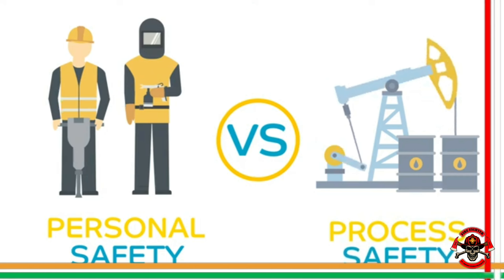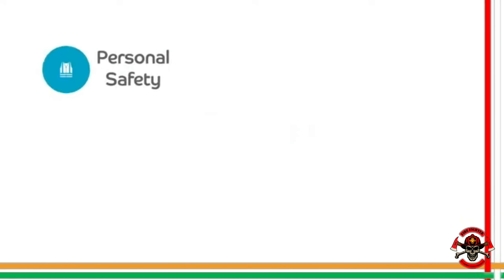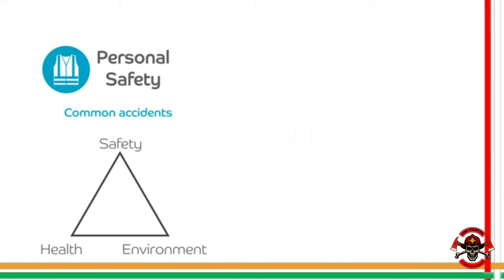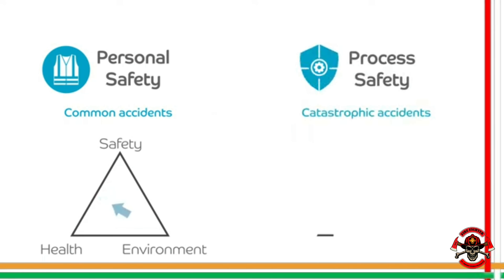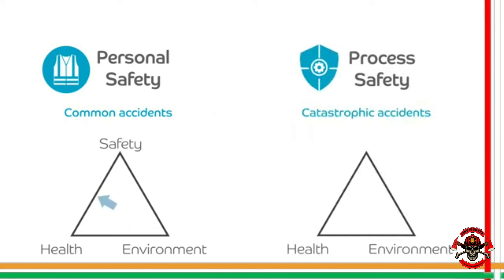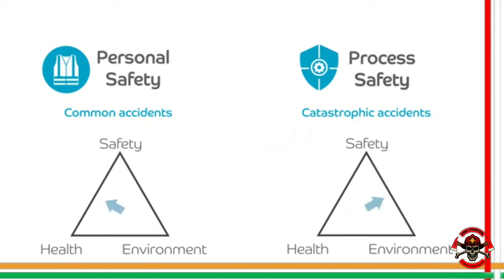Personal safety involves safety at work by preventing common accidents and protecting our workers — it focuses on the intersection of health and safety. Process safety, however, focuses on preventing catastrophic accidents that can damage assets and the environment, resulting from process conditions — in other words, the intersection between safety and the environment.